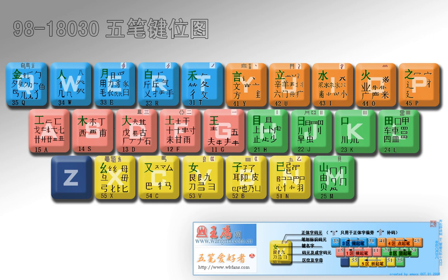The Wubi Zixing input method, simplified Chinese: 五笔字型输入法, traditional Chinese: 五筆字型輸入法, literally 'five-stroke character model input method', often abbreviated to simply Wubi or Wubi Xing, is a Chinese character input method primarily for inputting simplified and traditional Chinese text on a computer. Wubi should not be confused with the Wubawa method, which is a different input method that shares the categorization into five types of strokes.